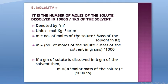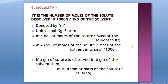Molality is denoted by small 'm'. Remember: molarity is capital M, molality is small m. A 0.1 small m would mean a 0.1 molal solution. Mathematically, molality (m) equals the number of moles of the solute divided by the mass of the solvent in kg. If the solvent mass is in grams, multiply the whole thing by 1000.